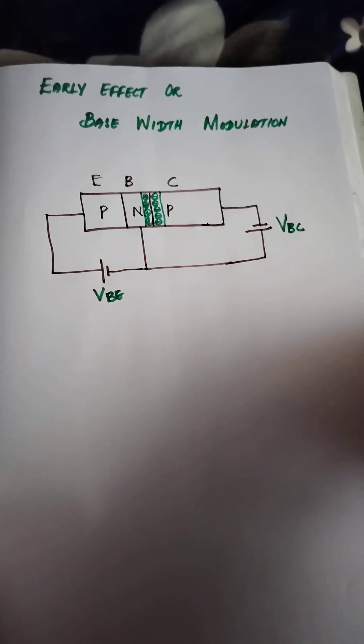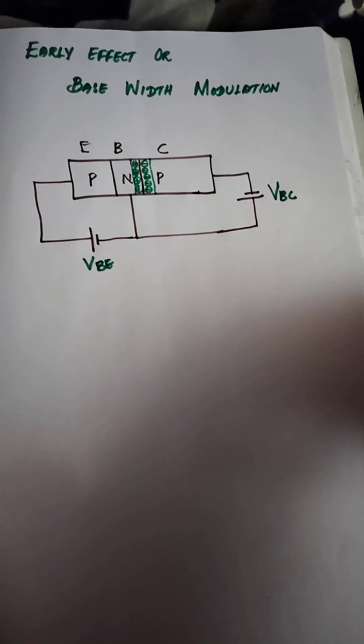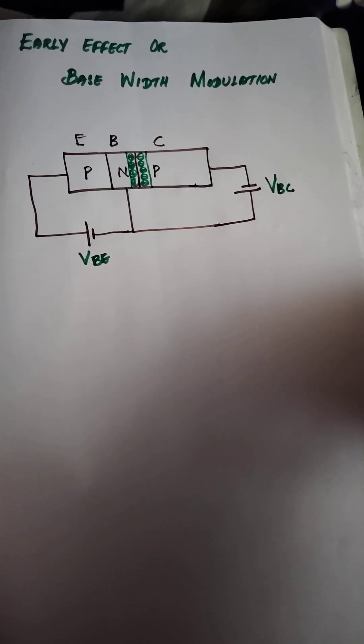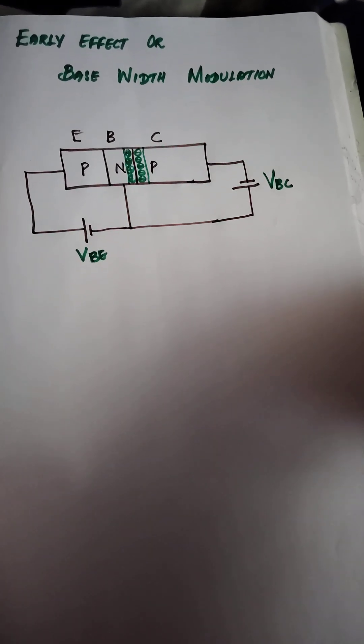Hi, hello guys. In this video we are going to see the topic on Early effect or base width modulation. Here we have a PNP transistor where P is the emitter junction, N is the base, and P is the collector terminal.